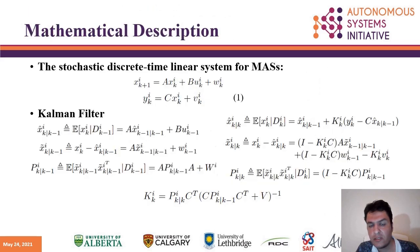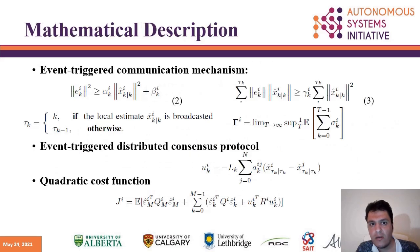The stochastic discrete-time linear system of a multi-agent system can be represented as follows. The Kalman filter, including the propagation step and updating step, is represented in the following form. We propose two triggering conditions: mixed type and integral type. Alpha and beta are the design parameters in the event-trigger mechanism. We define the average transmission rate as the average number of transmitted state estimates through the communication channel when the triggering condition is satisfied.